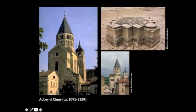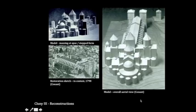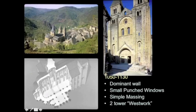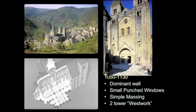We looked briefly at Cluny, which is just a fragment. But in its original state, it looks as though you could make it out of children's blocks almost — the massing is so clear. Let's look at the facade of Saint-Foy. In what way does this facade seem Romanesque to you?